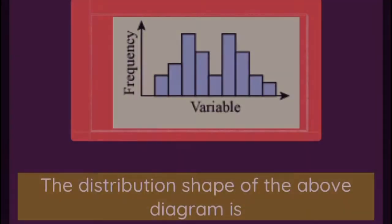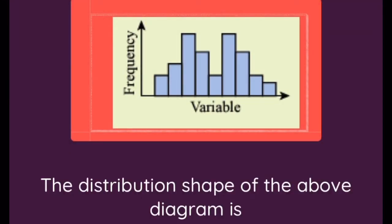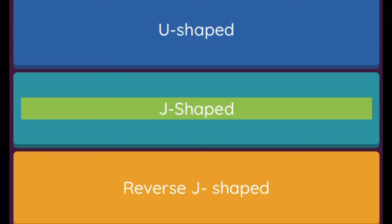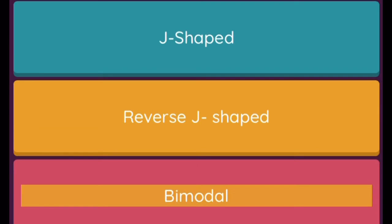Question: The distribution shape of the above diagram is: Option 1: U-shaped, Option 2: J-shaped, Option 3: reverse J-shaped, Option 4: bimodal.